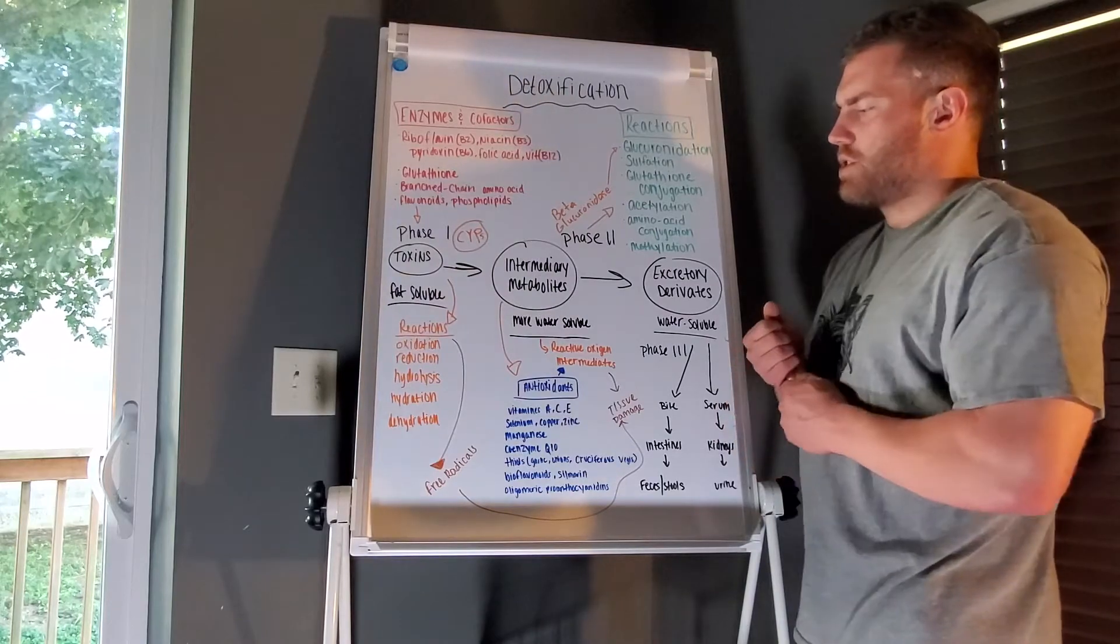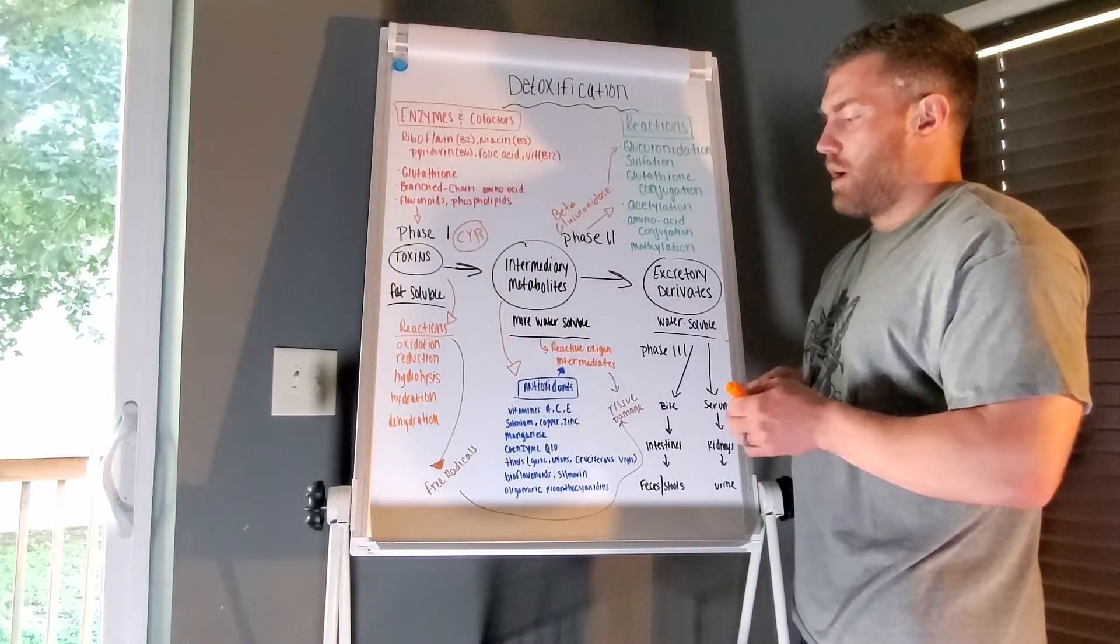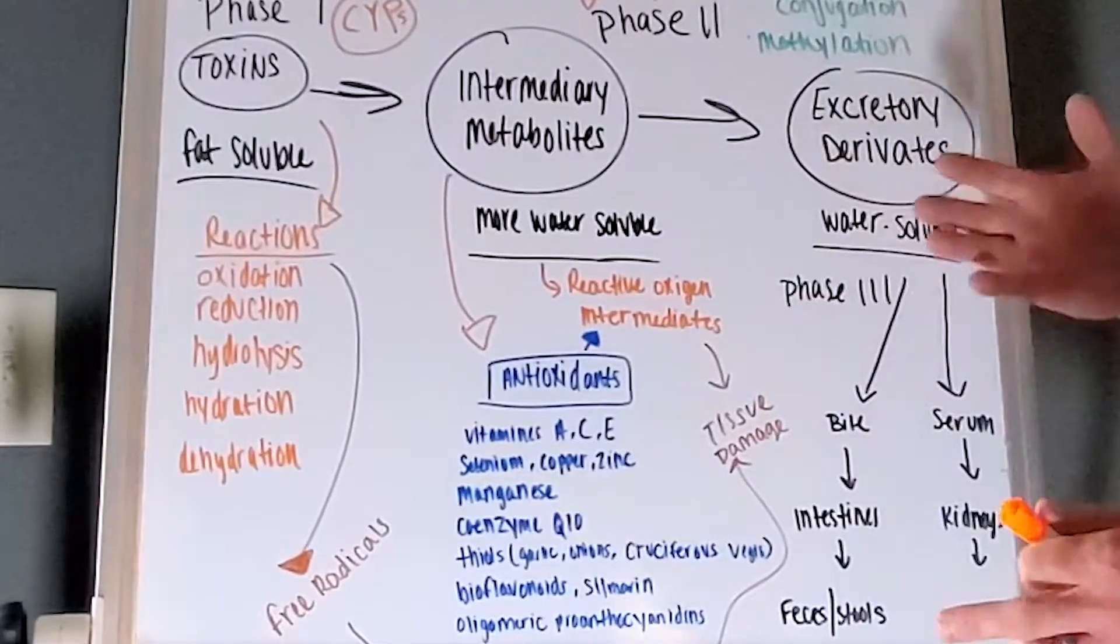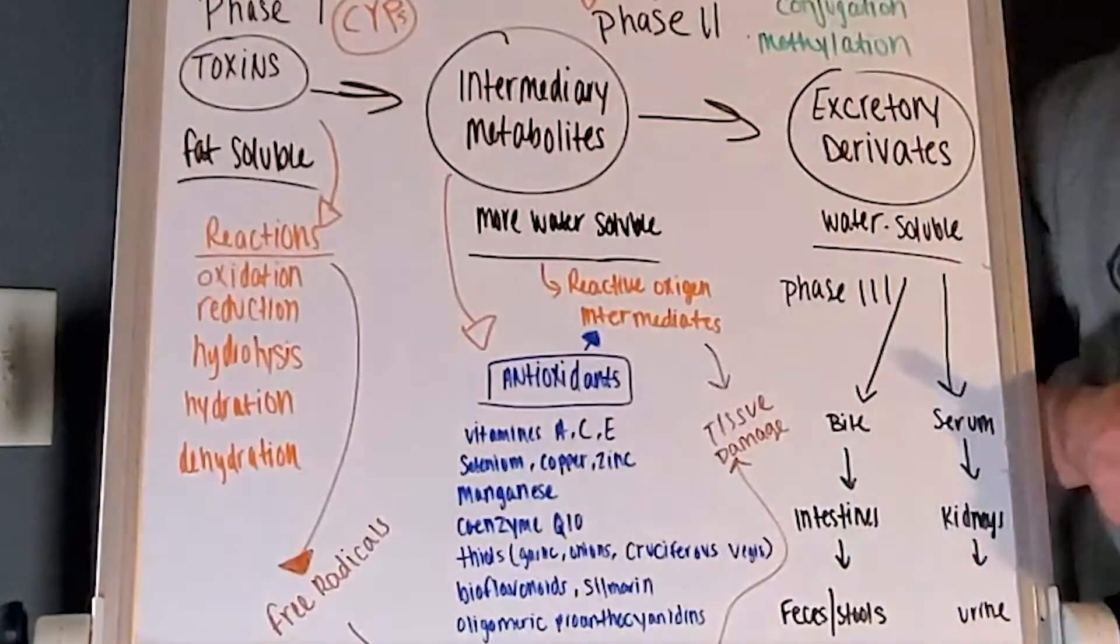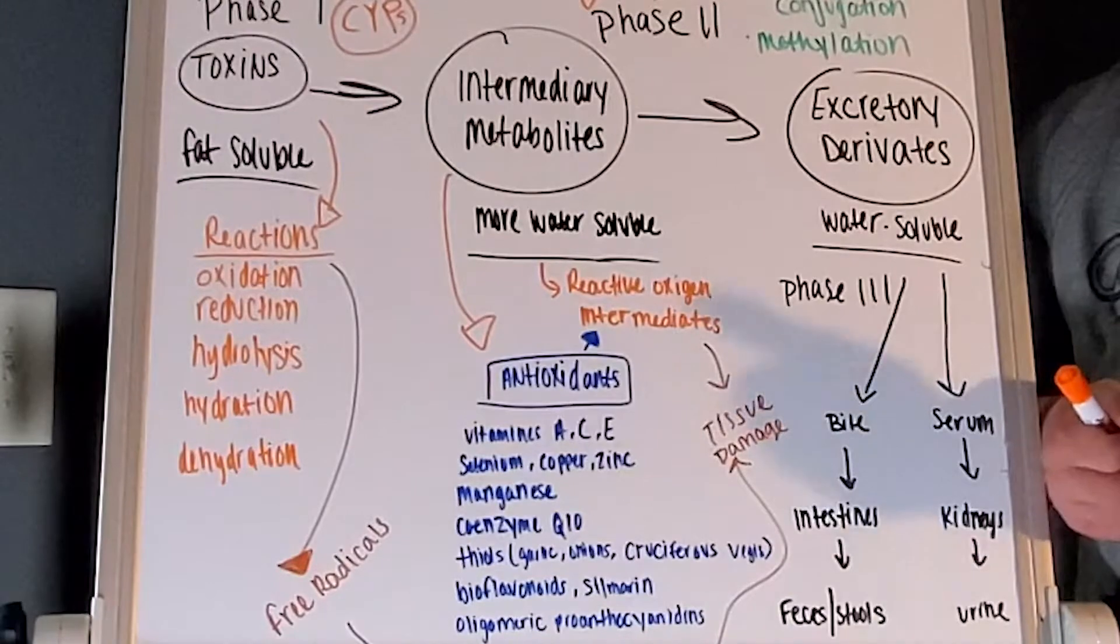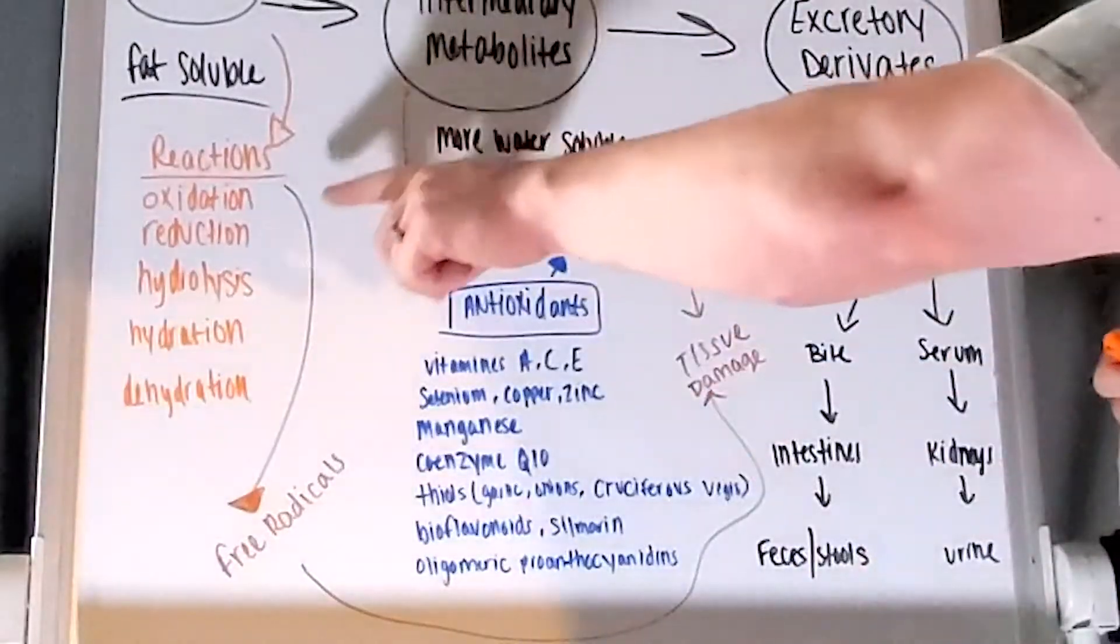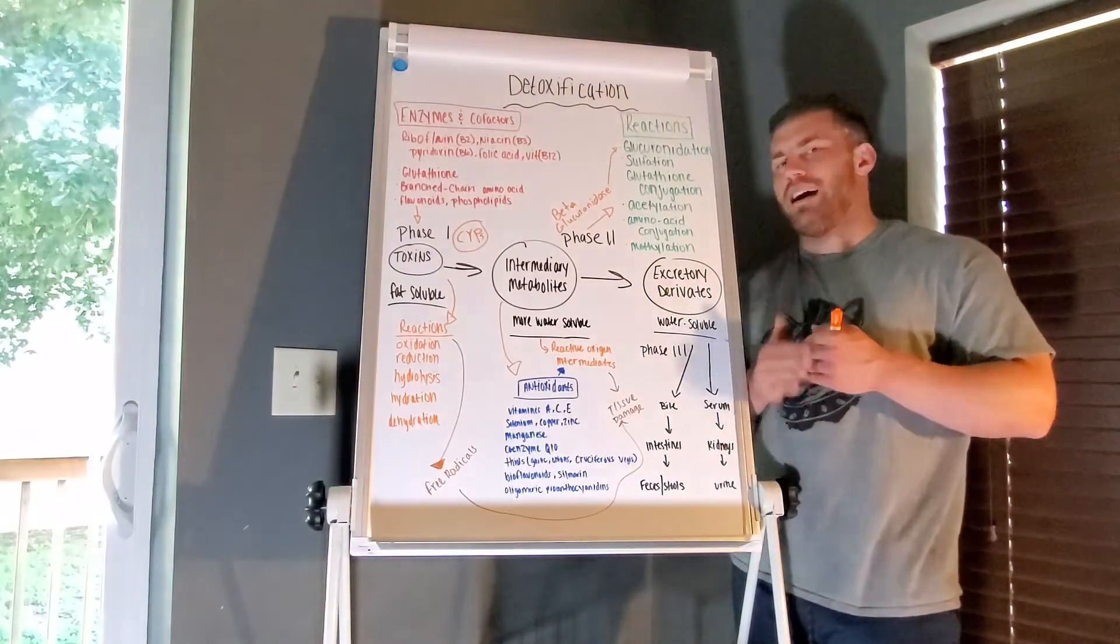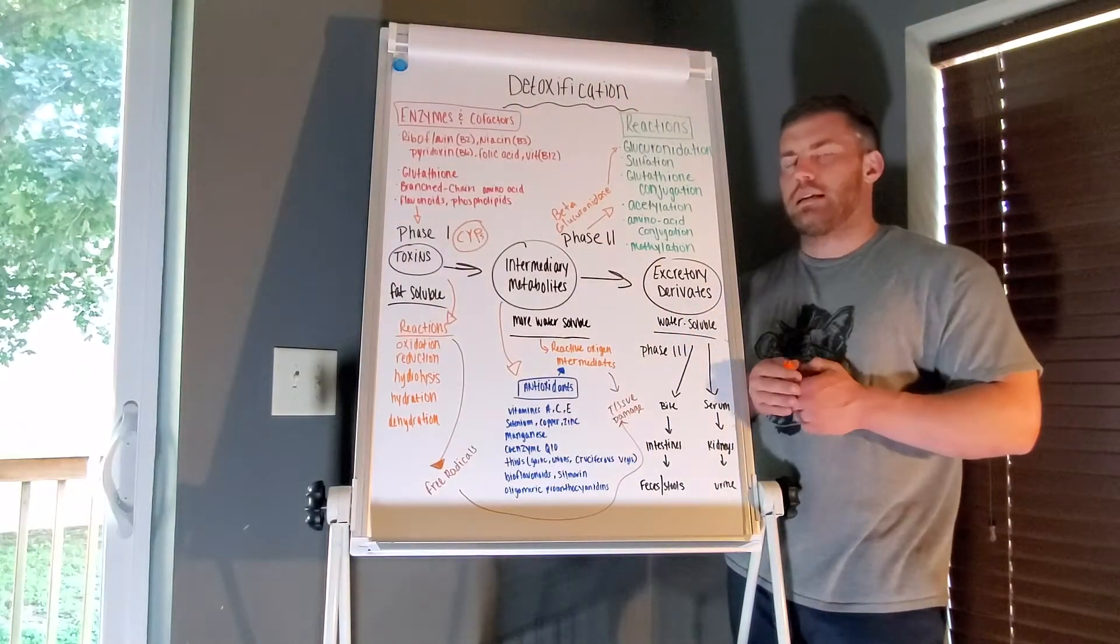Phase 2 is also dealing heavily with reactive oxygen species, so these are our intermediates. We're dealing with free radical damage. You'll see my arrows here. With this, what we have to do is balance free radicals with antioxidant intake.